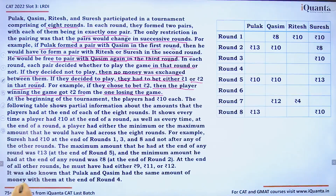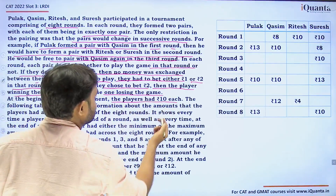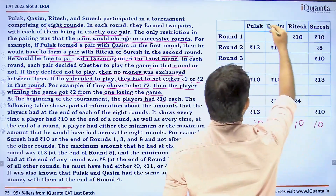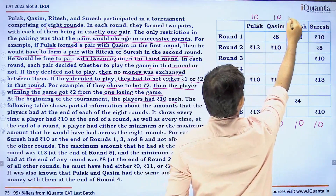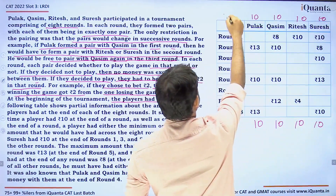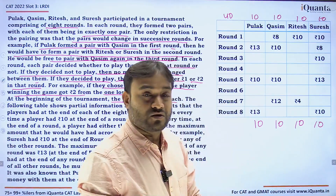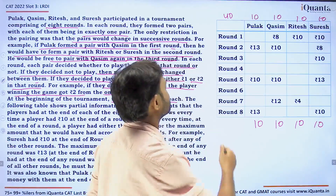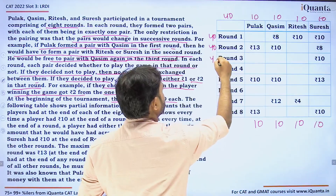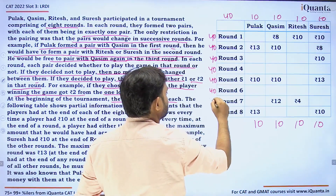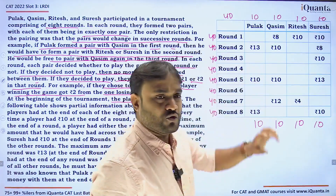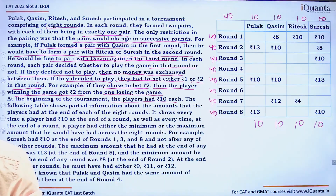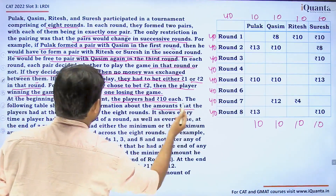At the beginning of the tournament, each player had 10 rupees — so 10, 10, 10, and 10, a total of 40 rupees across all four players. Since they are only exchanging money among themselves, the sum of all their amounts in each round must always be 40. The following table shows partial information about the amounts players had at the end of each of the eight rounds.